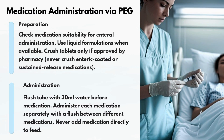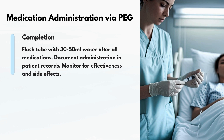For medication administration via PEG: during preparation, check medication suitability for enteral administration, use liquid formulations when available, and crush tablets only if approved by pharmacy — never crush enteric-coated or sustained-release medications. For administration, flush the tube with 30 mL of water before medication, administer each medication separately with a flush between different medications, and never add medication directly to feed. After completion, flush with 30–50 mL of water, document administration, and monitor for effectiveness and side effects.